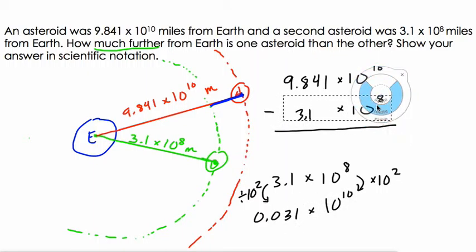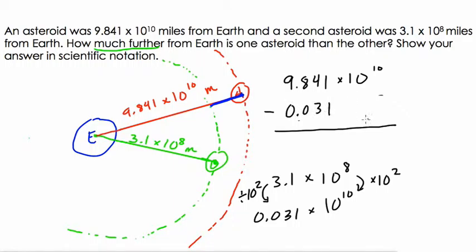So canceling this out. Now I'm dealing with 10 to the tenth. I'm dealing with 10 billions. So it's easier to subtract. And I can just line this number up. 0.031 times 10 to the tenth. So because I have the powers of 10 the same, I'm dealing with the same relative place value. We're dealing here in 10 billions.